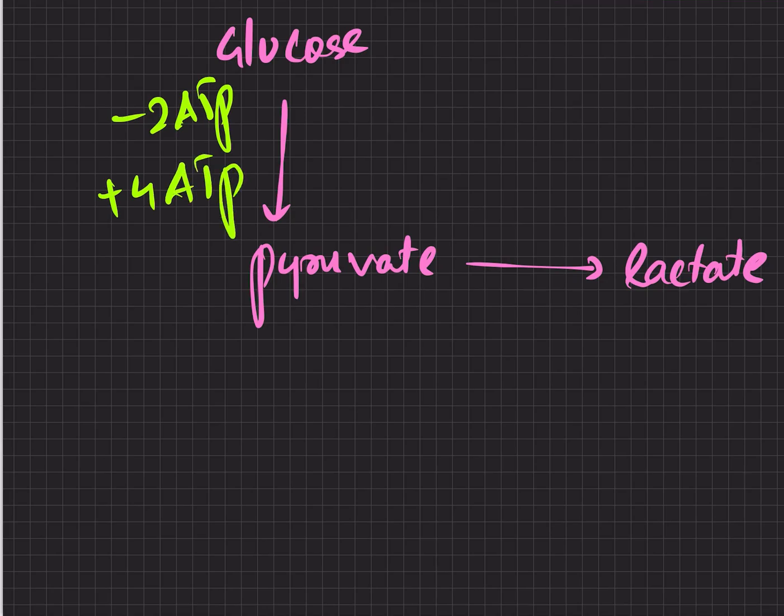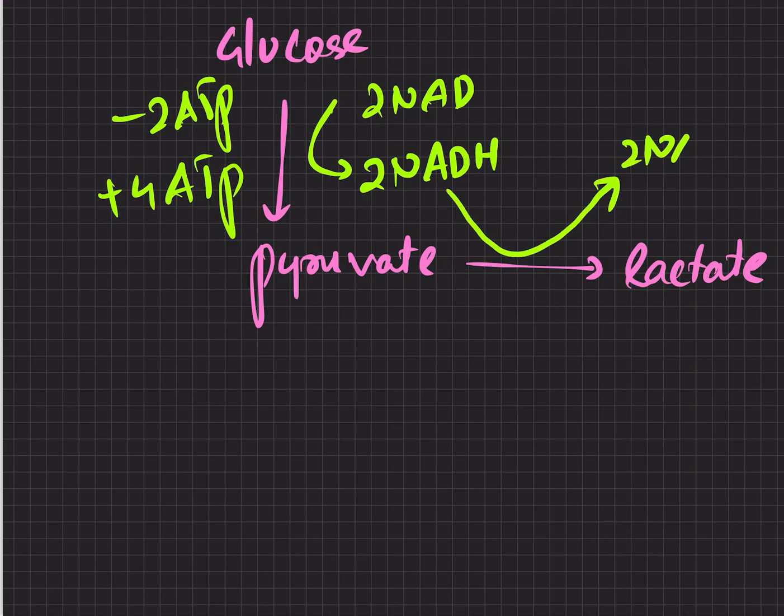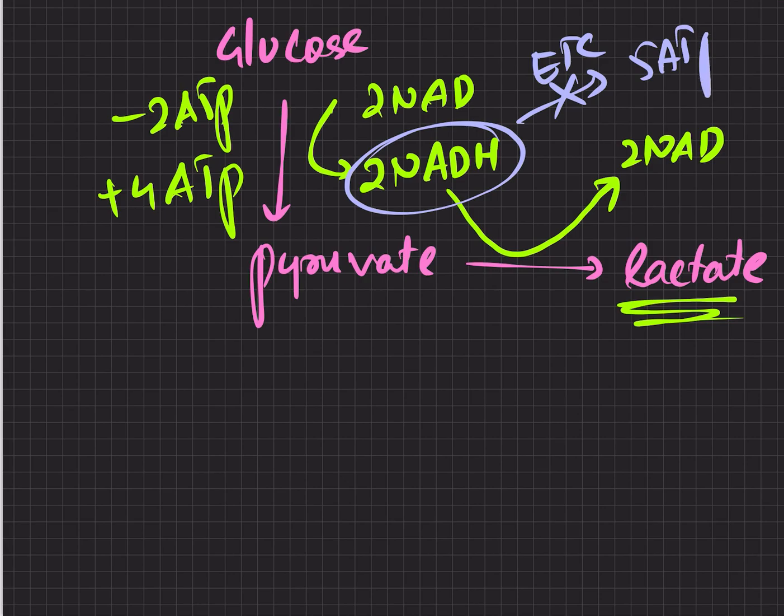But the change comes here: the two moles of NAD+ which has been converted into two moles of NADH is being utilized in this step to produce two moles of NAD+ to produce lactate. Therefore there will be no more NADH that goes to the ETC and produces 5 ATP.